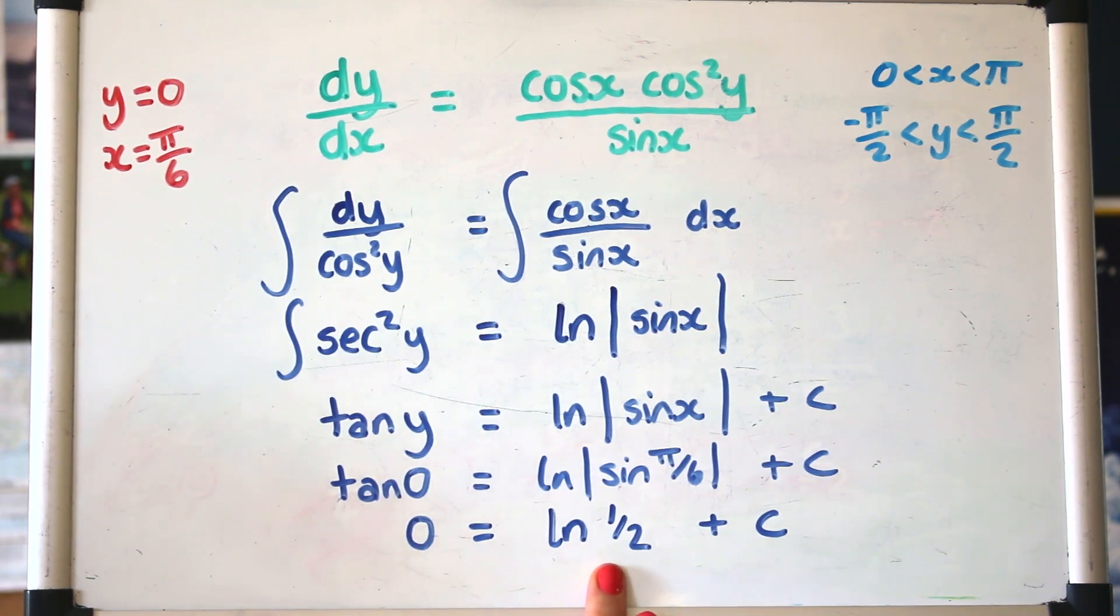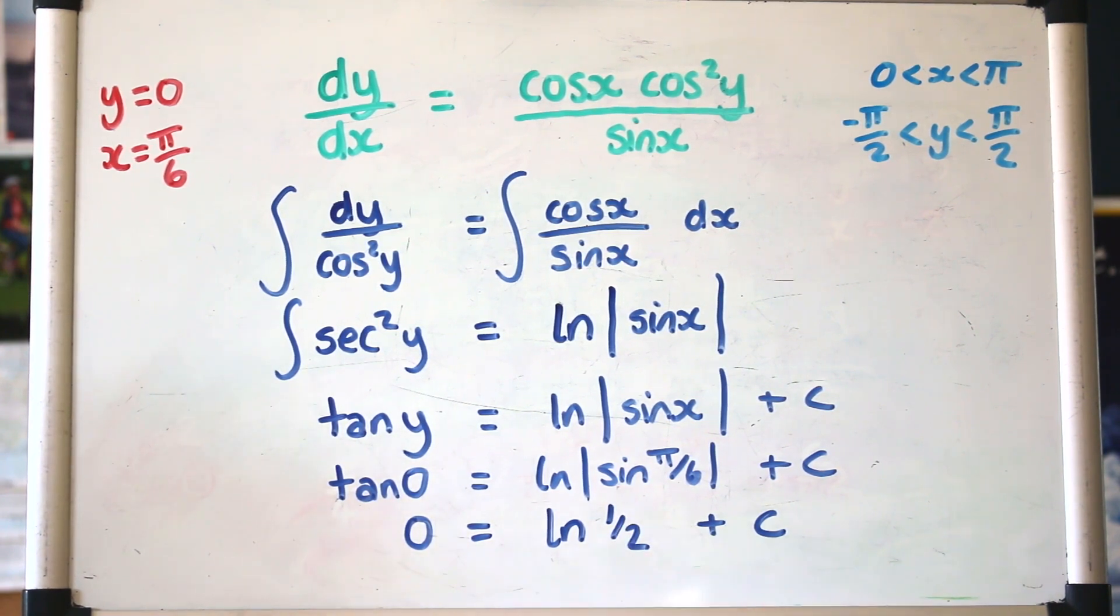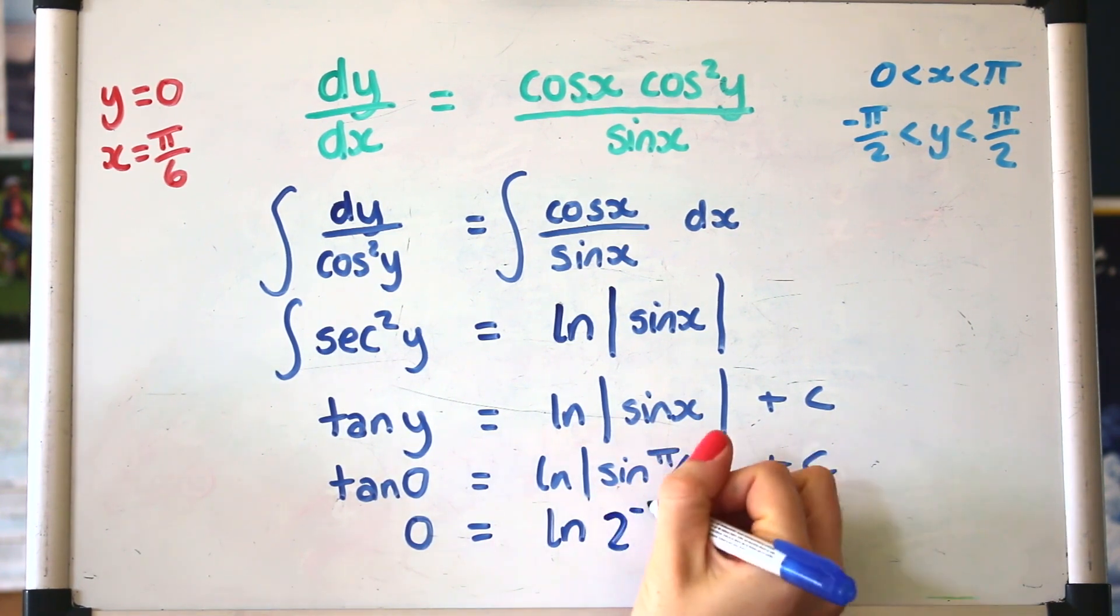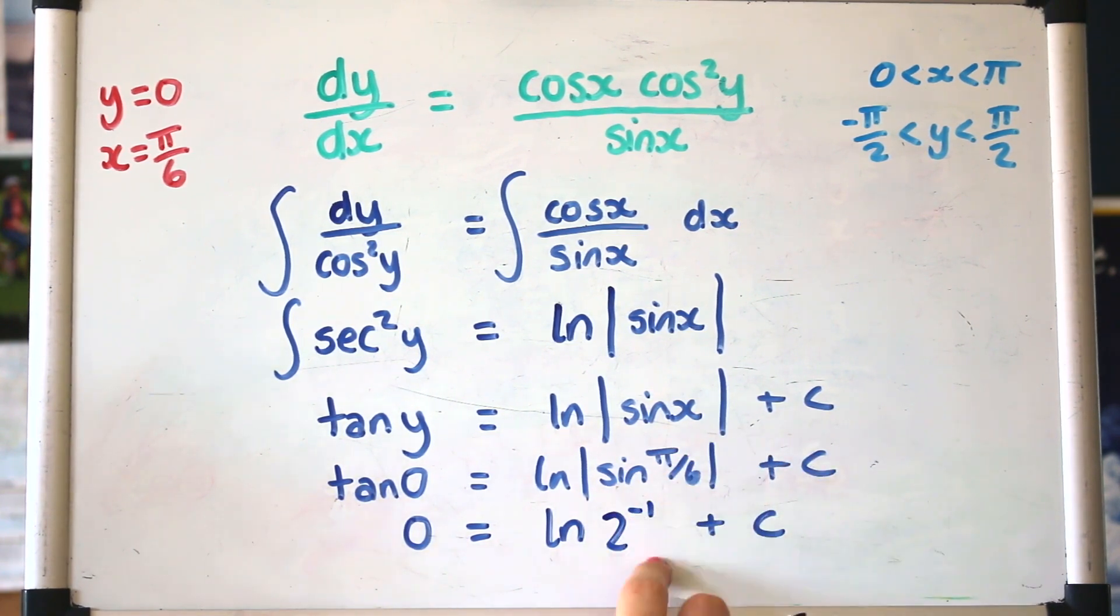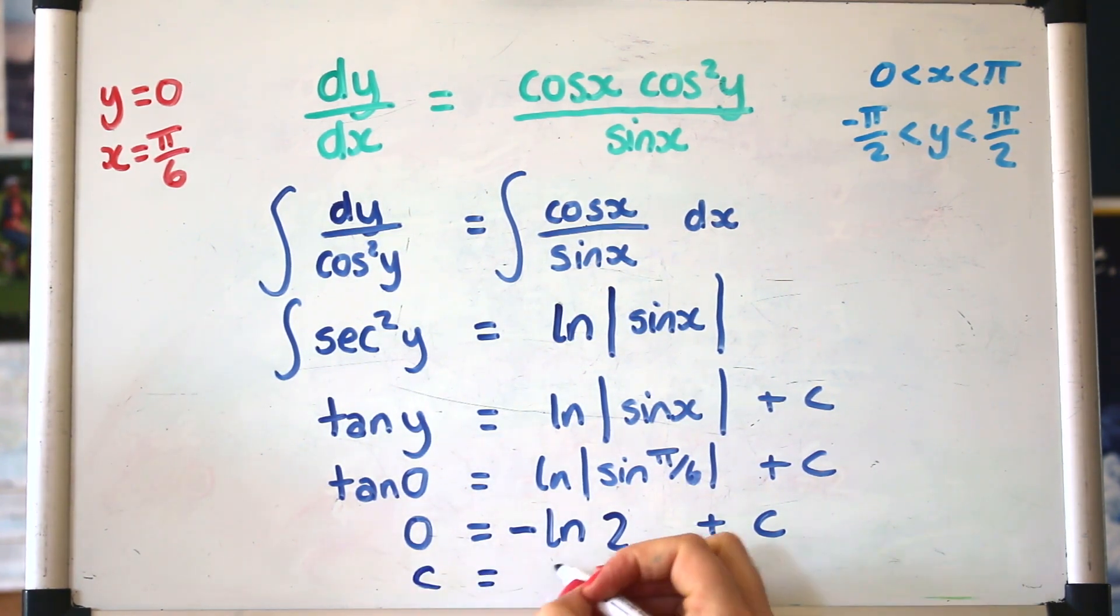It's okay to do it like that, but if you're ever in a situation where an exam's asking you for a particular form to get it into a certain form, then this is something that you can do to manipulate this. A half is the same as 2 to the power of minus 1, and then whenever you've got a log or something with a power, you can bring that power to the front. So log of a half is the same as minus log of 2, and that gives a nice easy solution here. So our constant is log of 2.